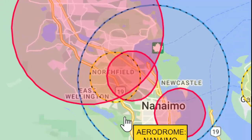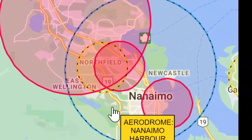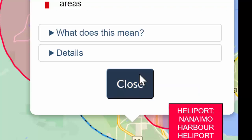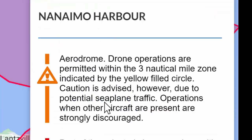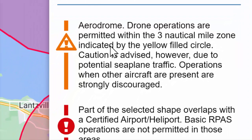The yellow is basically cautionary. It means that there are aerodromes in the area and that you should watch out for aircraft. It does not mean that you're prohibited from flying. As we take a look here, it tells you: aerodrome and drone operations are permitted within the three nautical mile zone indicated by the yellow filled circle. Caution is advised, however, due to potential seaplane traffic.